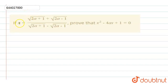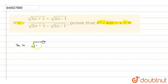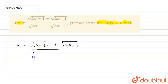Hello students. In this question we have been given an x value and we need to prove that x squared minus 4ax plus 1 equals 0. We are given that x equals (√(2a+1) + √(2a-1)) divided by (√(2a+1) - √(2a-1)).